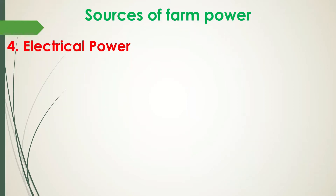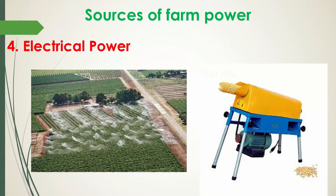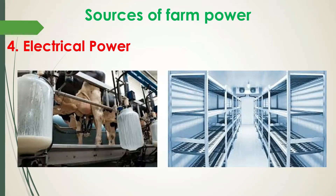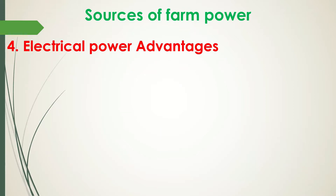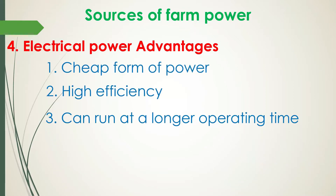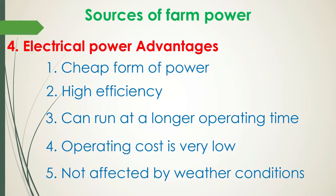Electricity has become a very important source of power on farms in various provinces of the country. It is steadily becoming more available with the increase of river valley projects and thermal stations. The largest use of electric power in agriculture is for irrigation and small machines. Besides this, the use of electric power in the dairy industry, cold storage, fruit processing, and cattle feed grinding has tremendously increased. Advantages include: very cheap form of power, high efficiency, can work at a stretch, and maintenance and operating cost is very low, and not affected by weather conditions.